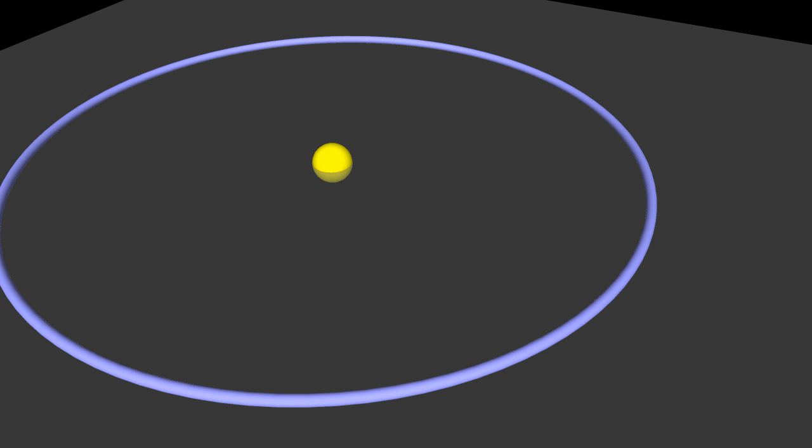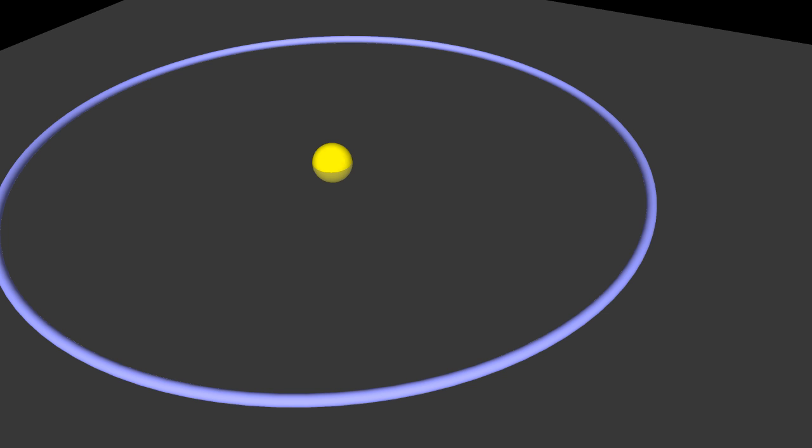The Earth moves about the Sun in an ecliptic plane. A line perpendicular to the ecliptic plane defines the ecliptic pole.